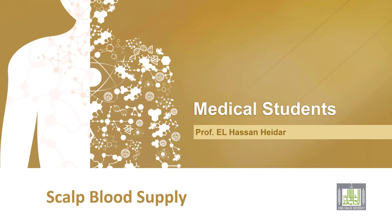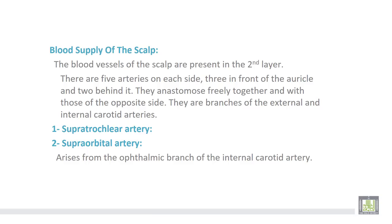Concerning the blood supply of the scalp, the blood vessels are present in the second layer. There are five arteries on each side, three in front of the auricle and two behind it. They anastomose freely together and with those of the opposite side. They are branches of the external and internal carotid arteries.